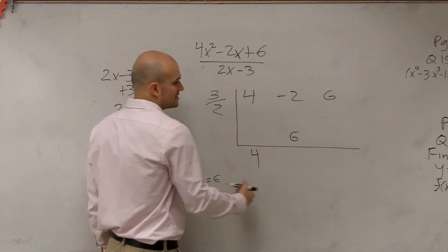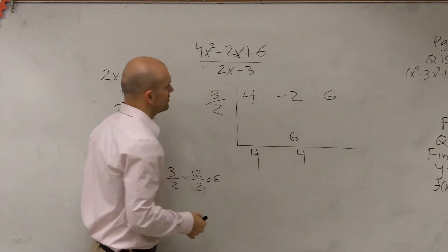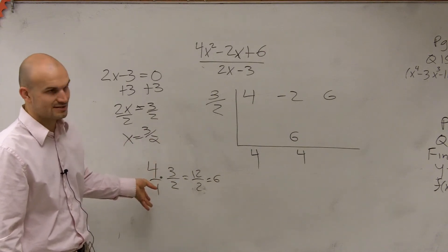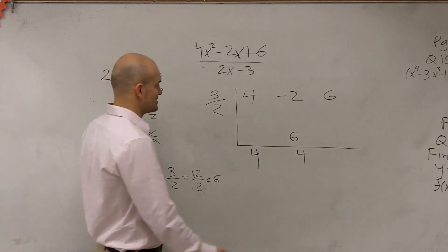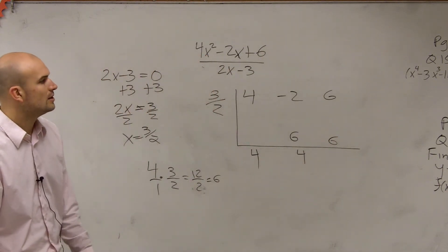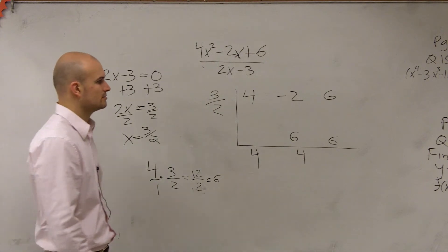Negative 2 plus 6 is positive 4. 4 times 3 halves again, we're getting the same answer. 4 times 3 halves, it's just going to give us 6. And then our final answer is going to be 12.